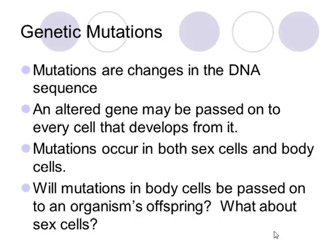Genetic mutations are changes in the DNA sequence. This altered gene that happens because of a mutation will be passed on every single time that cell divides and becomes another cell. We see these mutations happening in sex cells and in body cells. Now think about this: will the mutations in body cells be passed on to an organism's offspring? What about sex cells? Pause and return when you've answered.